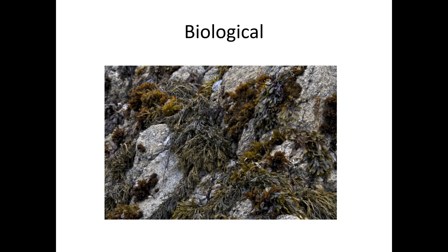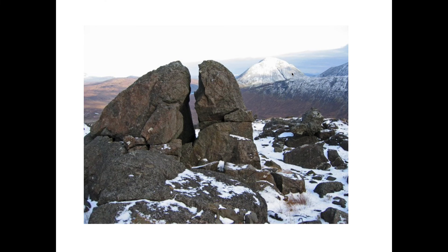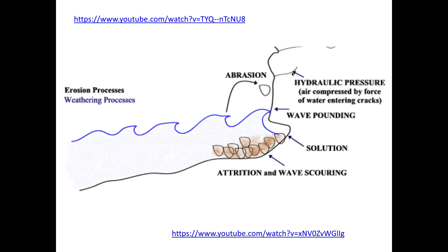Biological weathering is the action of plants and animals. Here we can see a rock covered in seaweed, and as that seaweed grows, very gently and slowly it could begin to force the rock apart and break it into smaller pieces. Mussels, limpets, and things like that have a similar effect. What these processes do is make the rocks weaker, which then makes them easier to erode — and that's how those processes work together.